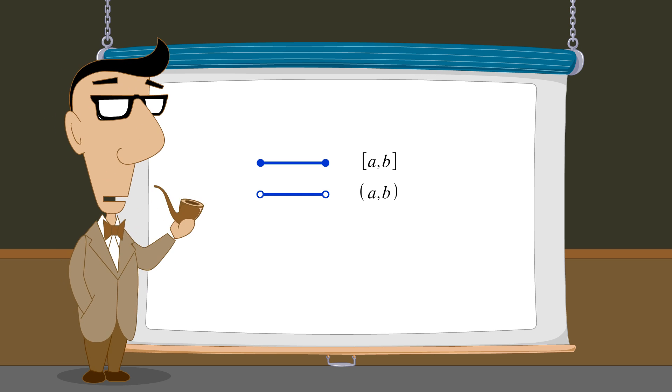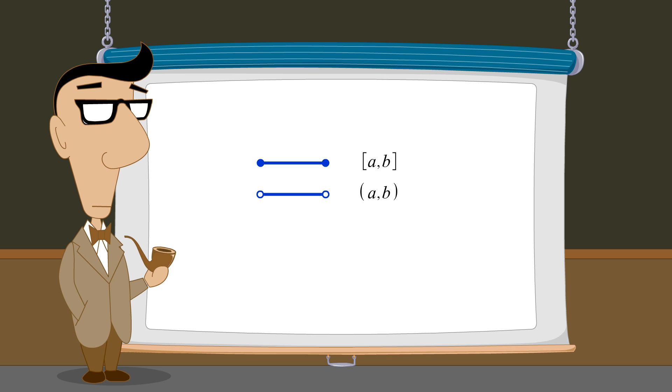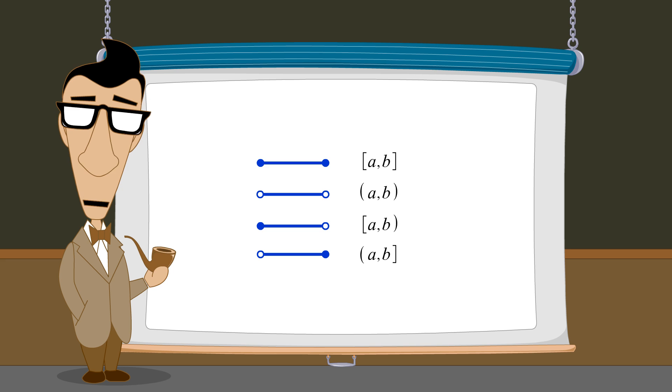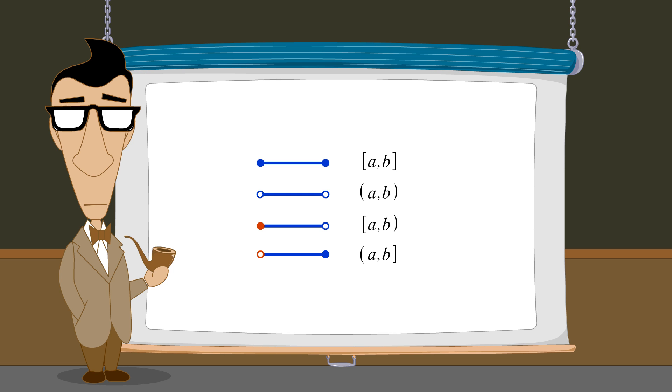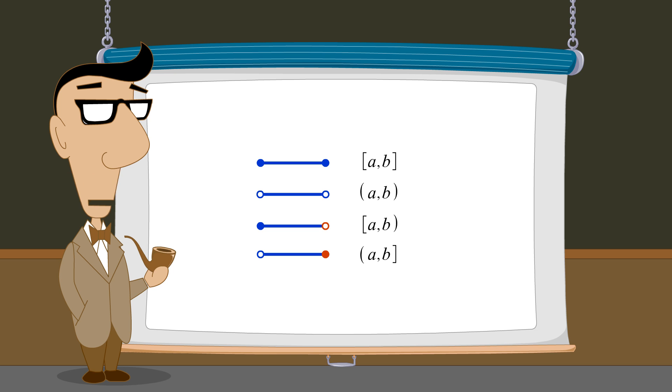It is also possible for one endpoint to be included and the other excluded. If the left endpoint is included or excluded the interval is said to be left closed or left open. And if the right endpoint is included or excluded the interval is right closed or right open.